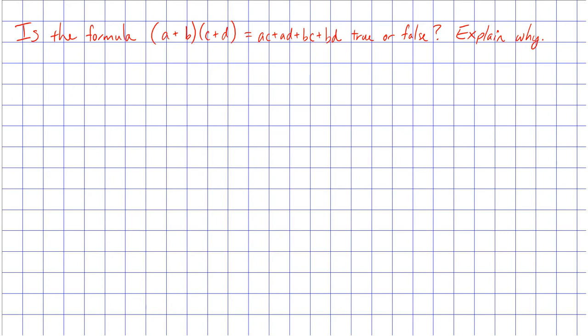In this video we're going to talk about whether the quantity (a+b) times quantity (c+d) equals ac + ad + bc + bd is true or false and explain why or why not.